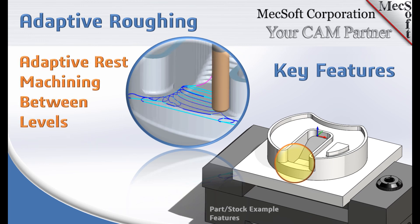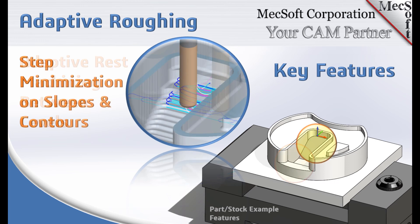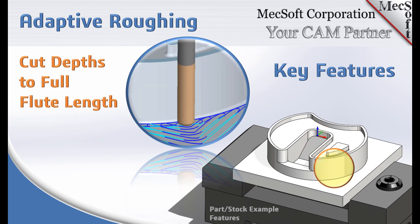For greater material removal, this toolpath automatically applies adaptive rest machining between cut levels, as well as step minimization along slopes and contours for more complete material removal. If you need to cut depths up to and including the full flute length of the cutter, no problem here.